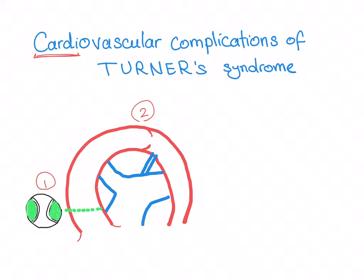Number one, which is the most common, is bicuspid aortic valve. Normally the aortic valve has three cusps — three parts of the valve — but this one has only two cusps.